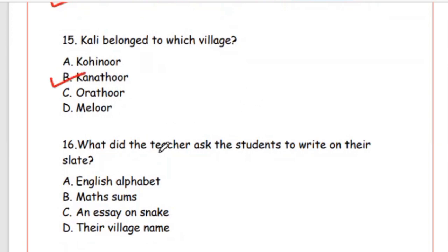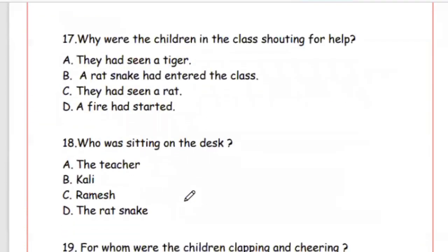Question 16: What did the teacher ask the students to write on their slate? Answer is Option A, the English alphabet. Question 17: Why were the children in the class shouting for help? Options: they had seen a tiger, a rat snake had entered the class, they had seen a rat, a fire had started. The right option is Option B, a rat snake had entered the class.